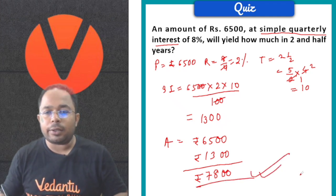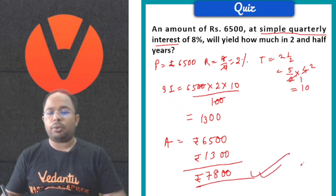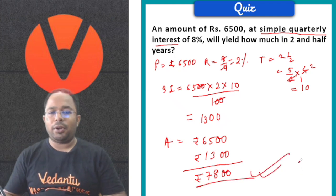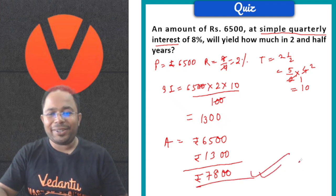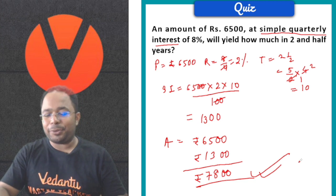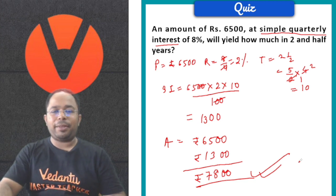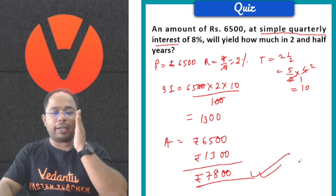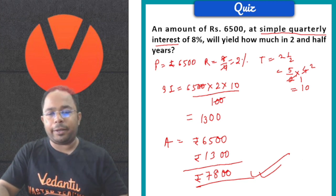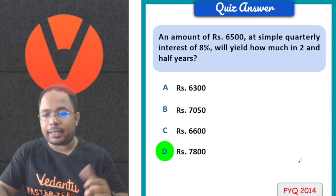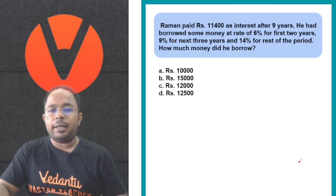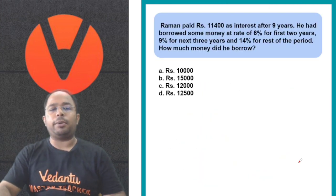That is our answer — Rs. 7,800. Alright, bahut badia students! So if you got 7,800, bahut badia. Fintastic, ha na? Next question ki baat.